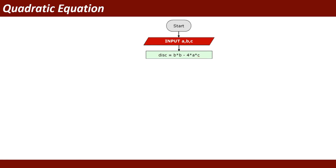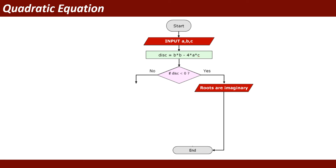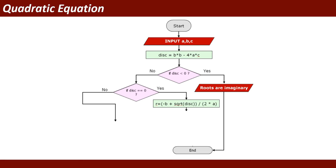After calculating the discriminant, we check: if disk is less than 0, it shows the message 'roots are imaginary.' If disk is not less than 0 — meaning disk equals 0 — then it calculates the root: r = minus B plus square root of disk, divided by 2A.